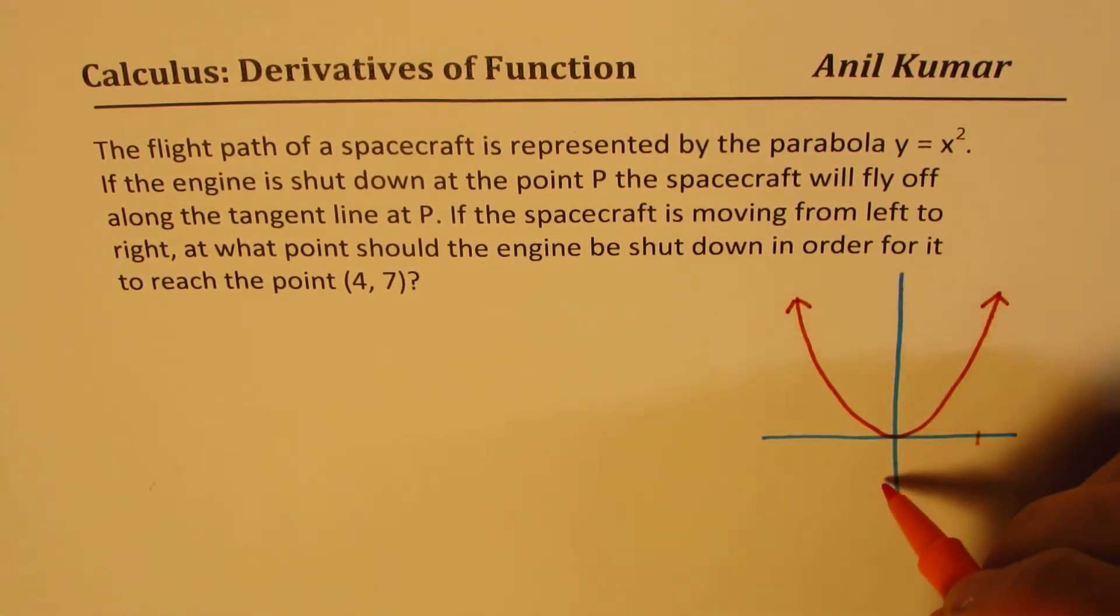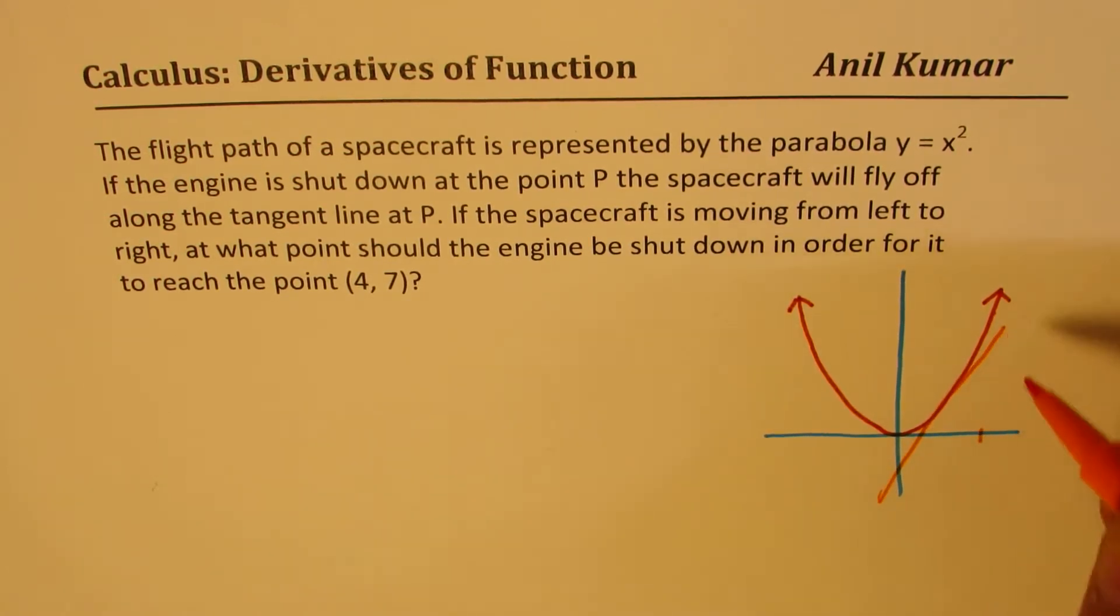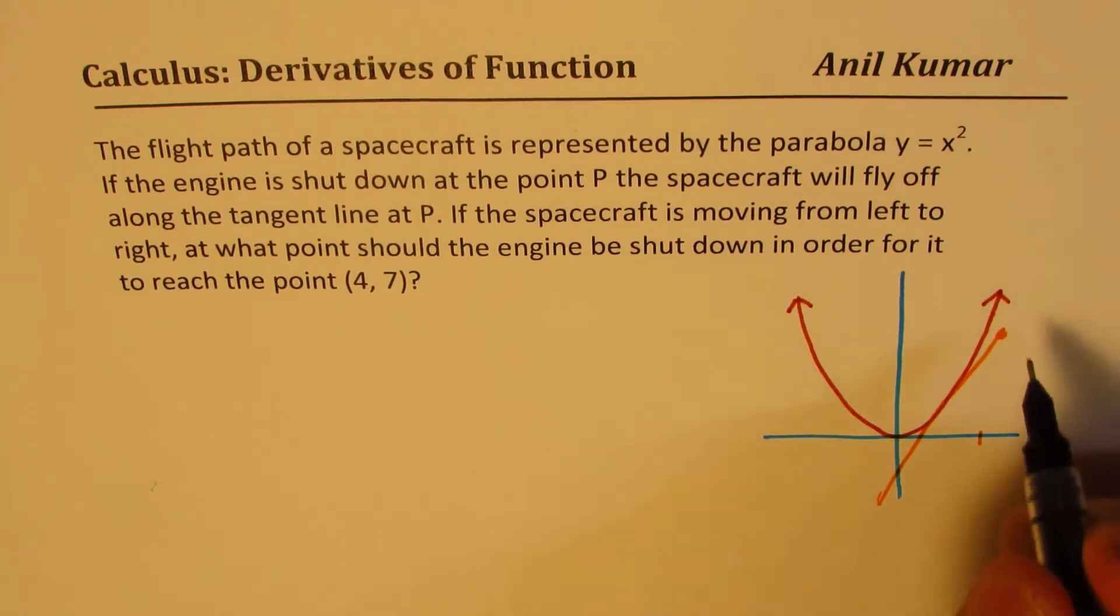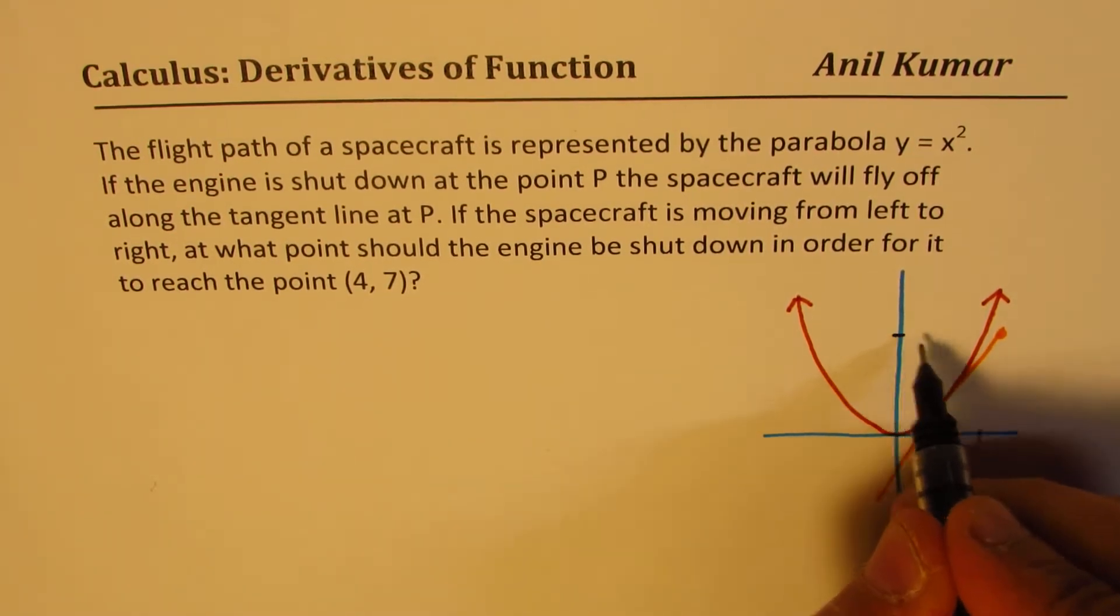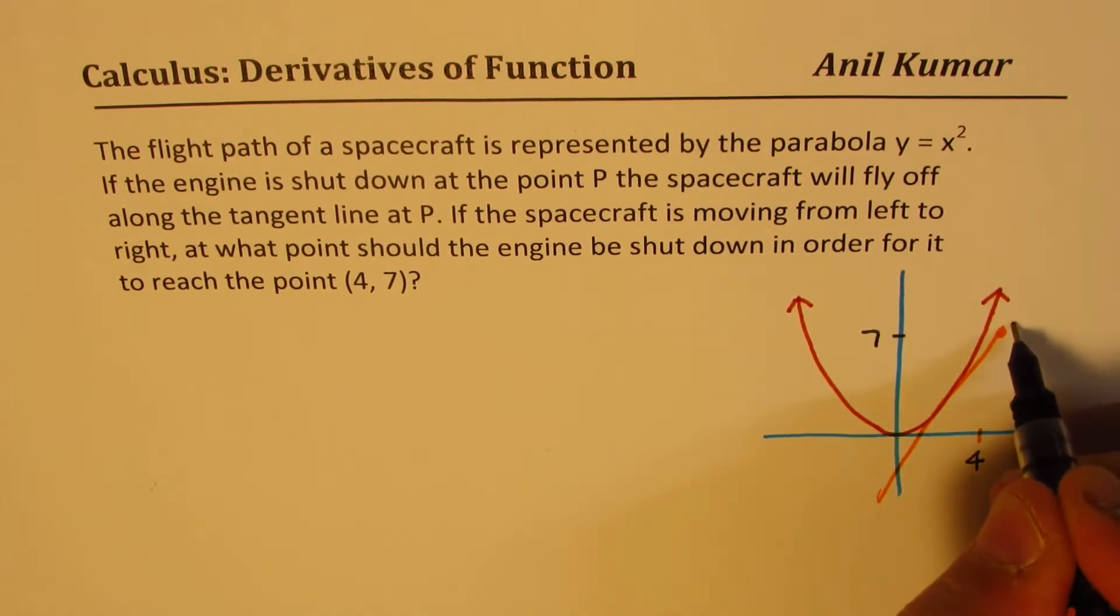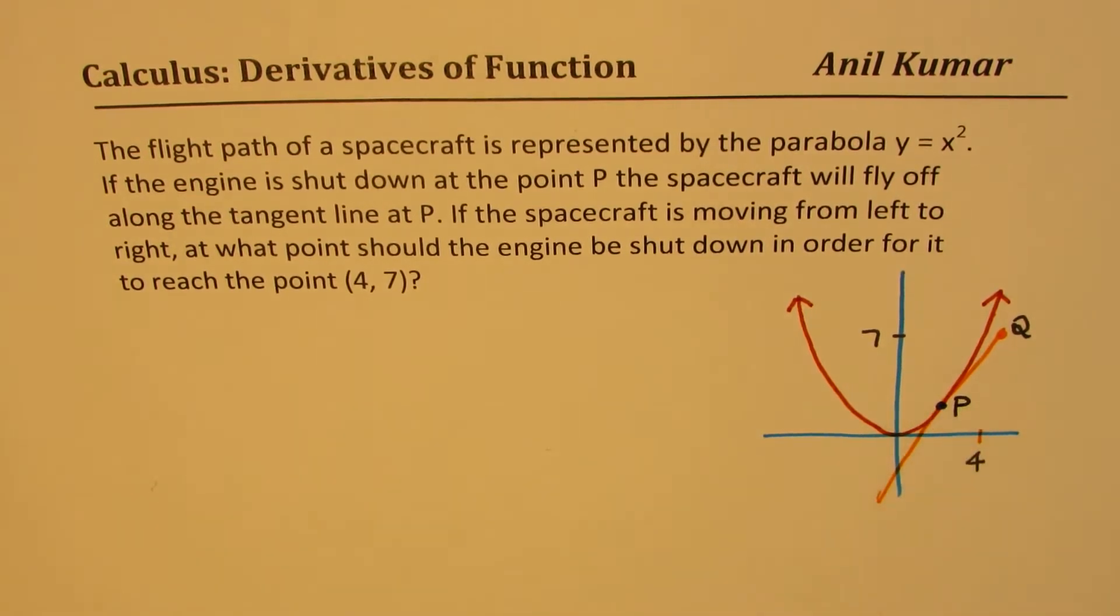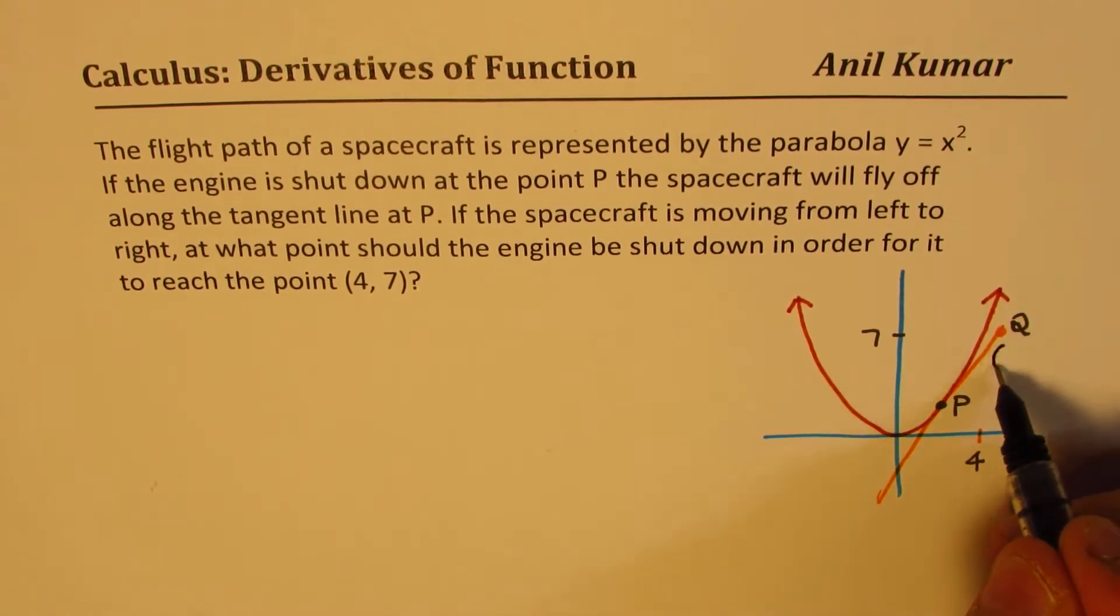So if you have to reach there, the tangent could be something like this. Let's say that's the point. So let's call this point as Q. Now, we are interested in finding this point P where the engine should be shut off because then it will move tangentially and reach that point. Coordinates of point Q are (4, 7).